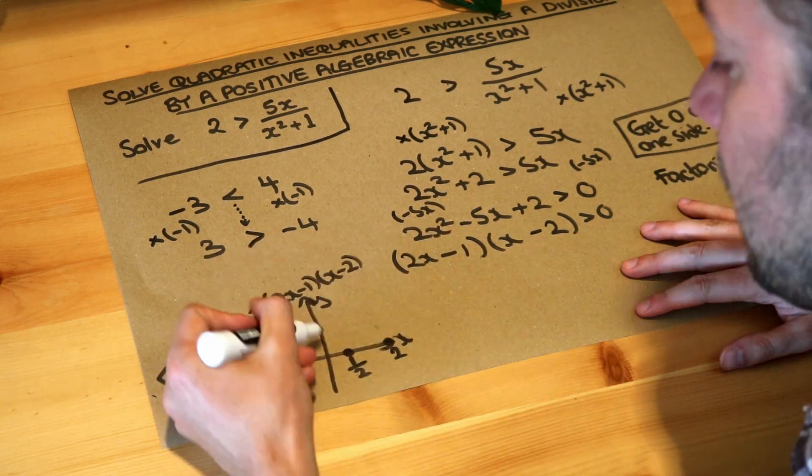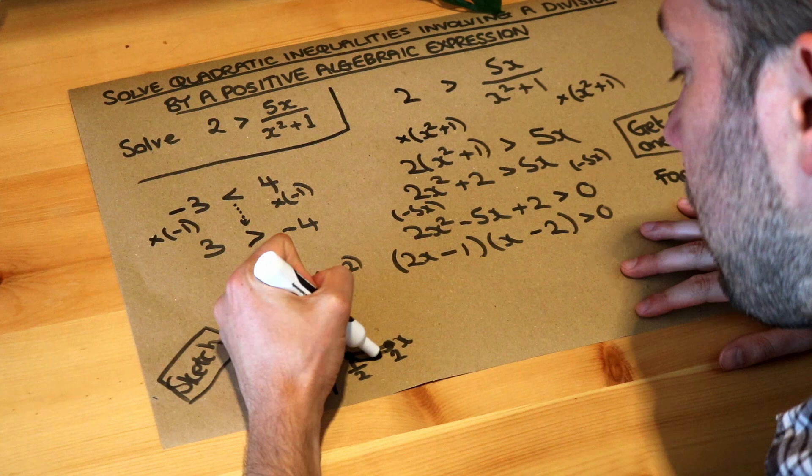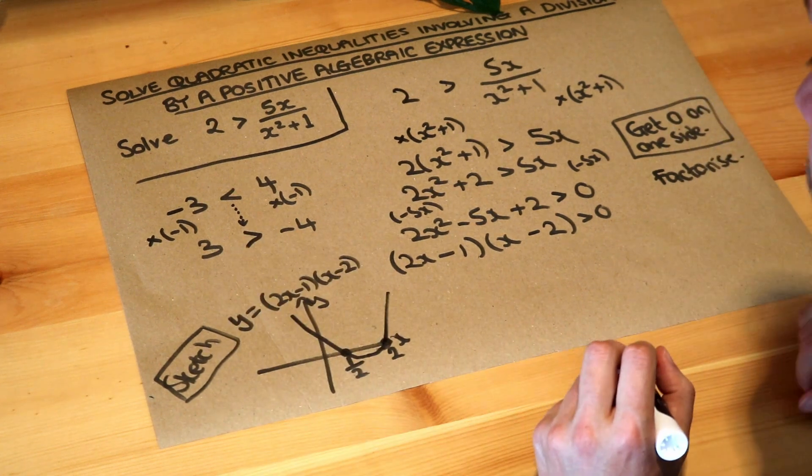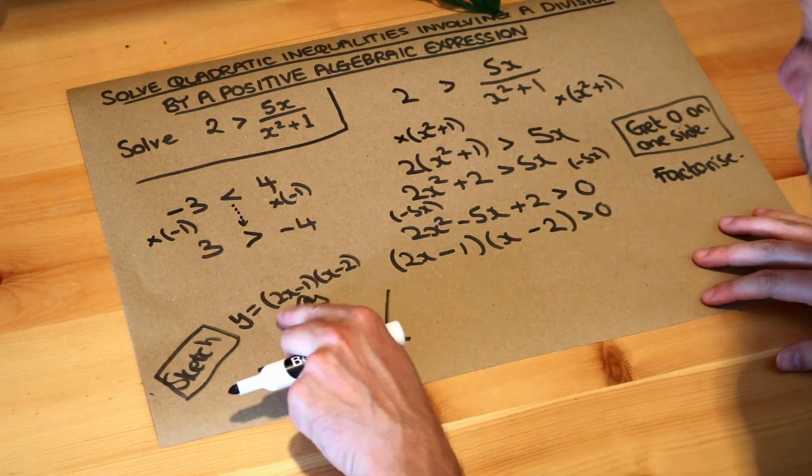And then we know when we sketch a quadratic it's going to give you a smiley face shape if it's a positive quadratic, we get that. And then finally we reason about our sketch.